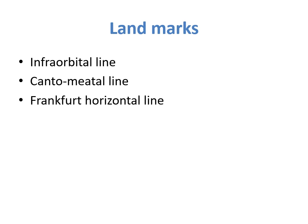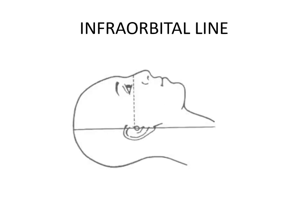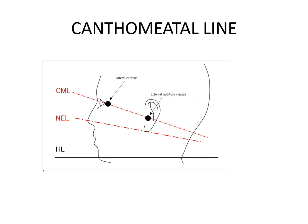The infraorbital line is the line passing below the orbit, as shown by the dotted line in the diagram. The canthomeatal line is shown by a red dotted line passing from the lateral canthus — the outer corner of the eye — towards the external auditory meatus, hence it is called the canthomeatal line.